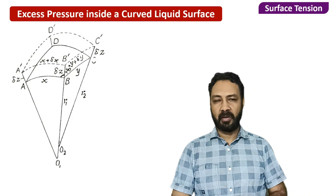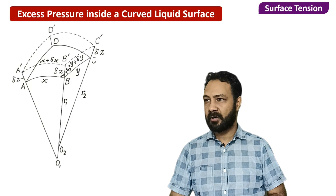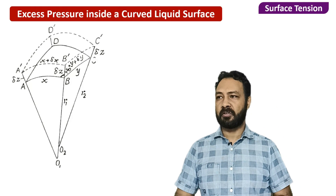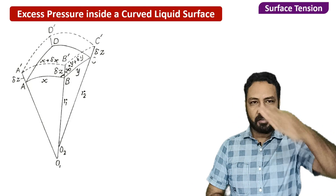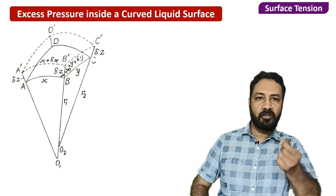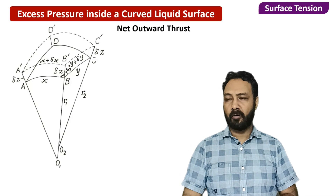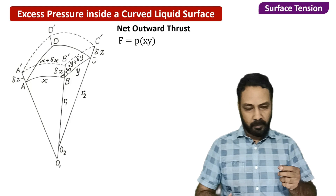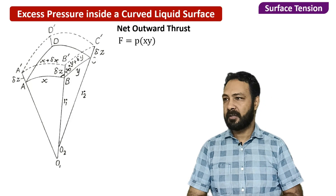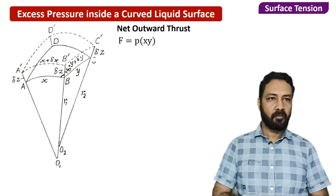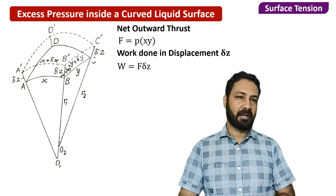The excess pressure P means pressure below ABCD minus pressure above ABCD. Because of the excess pressure, we find the thrust force on surface ABCD. With area XY and excess pressure P, the net outward thrust is P·XY. As the liquid surface moves a small distance ΔZ above, the work done by the thrust force is F·ΔZ = P·XY·ΔZ.